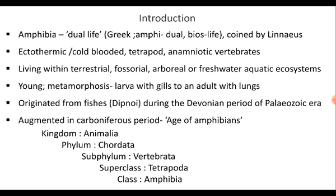According to Romer, Dipnoi fishes are the uncles of amphibians, and according to Newman, both Dipnoi and amphibians had the same grandfather, meaning they shared the same ancestors. The systematic position of class Amphibia is: Kingdom Animalia, Phylum Chordata, Subphylum Vertebrata, and Superclass Tetrapoda.